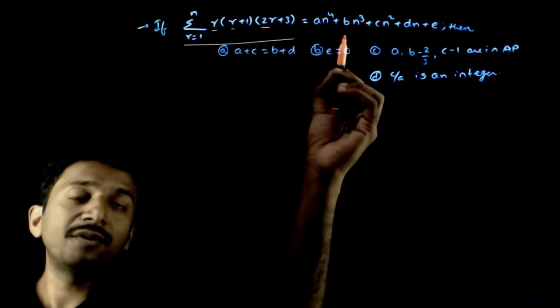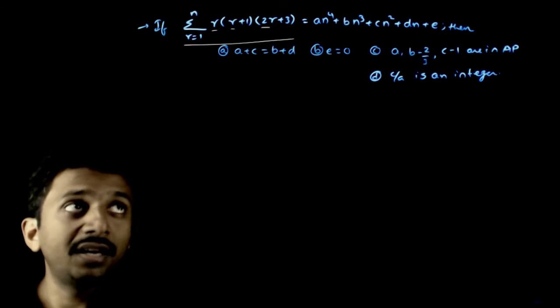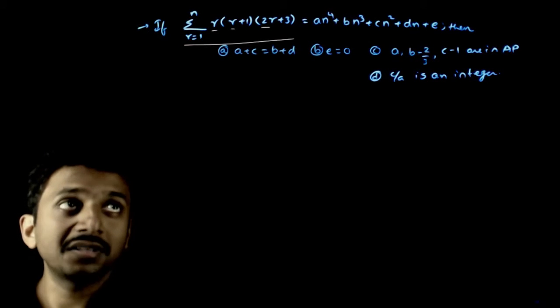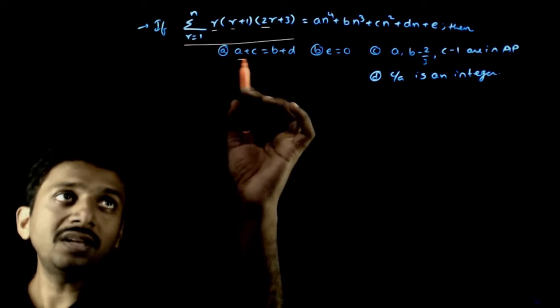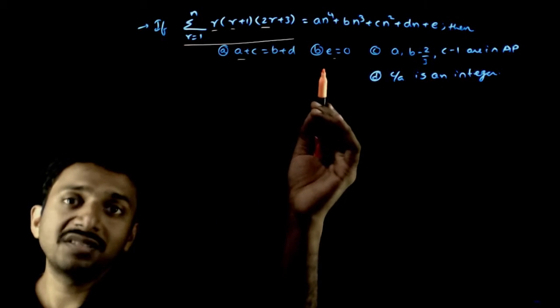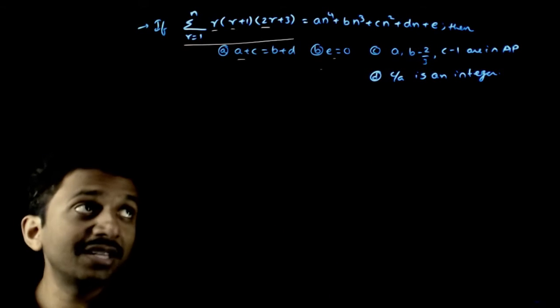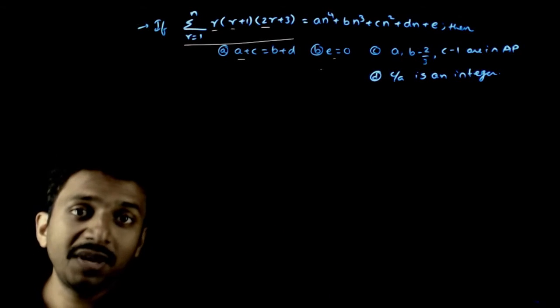Let it be a n power 4 plus b n cube plus c n square plus d n plus e, and you are asked to find some conclusions about the coefficients that you have: a plus c equals b plus d, e equals 0, a, b minus 2 by 3, c minus 1 are in AP, and c by a is an integer.